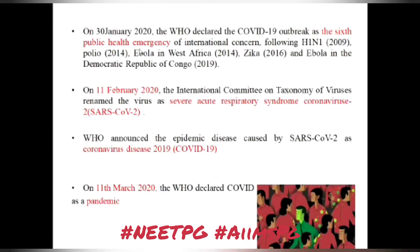On 30 January 2020, the WHO declared COVID-19 as the 6th public health emergency of international concern, following H1N1 in 2009, polio in 2014, Ebola in West Africa in 2014, Zika in 2016, and Ebola in the Democratic Republic of Congo in 2019. On 11 February 2020, the International Committee on Taxonomy of Viruses renamed the virus as severe acute respiratory syndrome coronavirus 2, and WHO announced the disease as coronavirus disease 2019 (COVID-19). Then on 11 March 2020, the WHO declared it a pandemic.